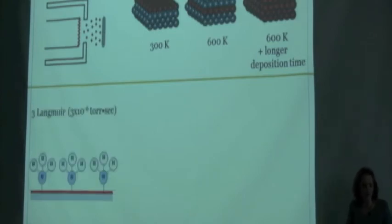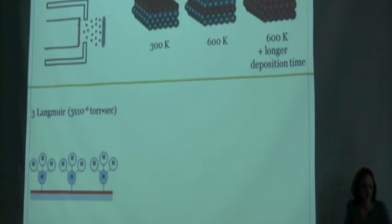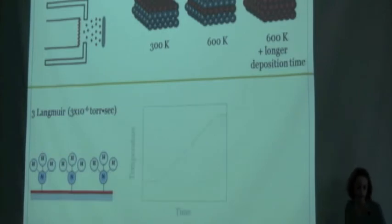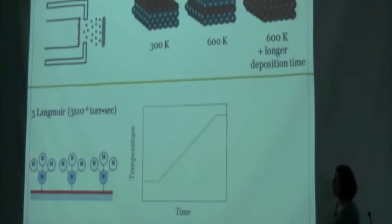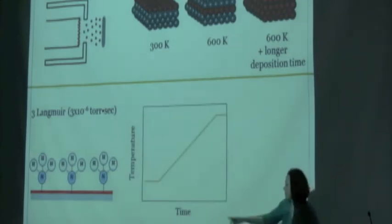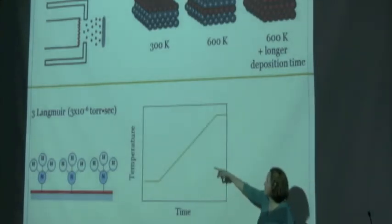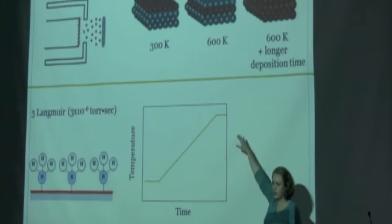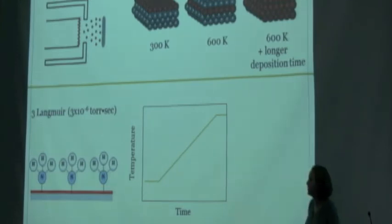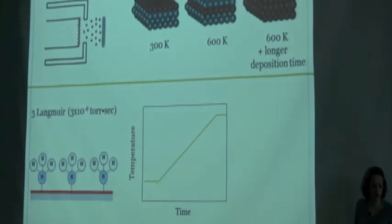After we create the different surfaces, we introduce the ammonia molecule — which is NH3 — onto the surface, and then we heat up the surface. This is the temperature as a function of time; it's a linear temperature ramp, and we watch what comes off.